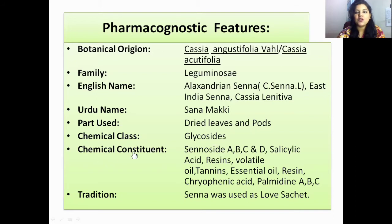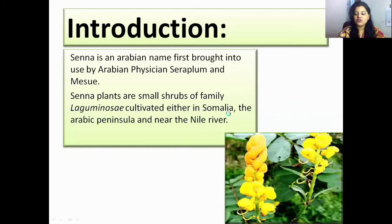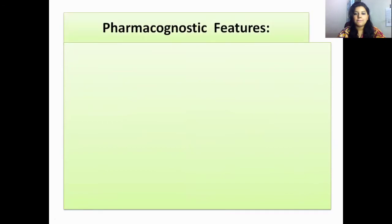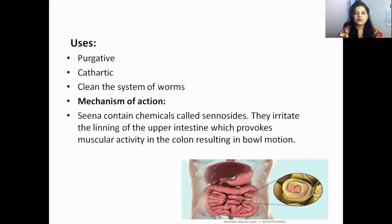The chemical class is glycosides. Chemical constituents include sennosides A, B, C, and D; salicylic acid; resins; volatile oil; tannins; essential oil; chrysophanic acid; and palmatine A, B, C. Its tradition is that Senna was used as a laxative.